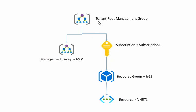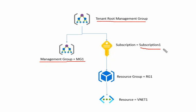In our scenario, we have a tenant root group on the top level, then one management group named MG1. Under the tenant root group we have one subscription named Subscription 1, under Subscription 1 we have one resource group RG1, and under RG1 we have one resource named VNet1.